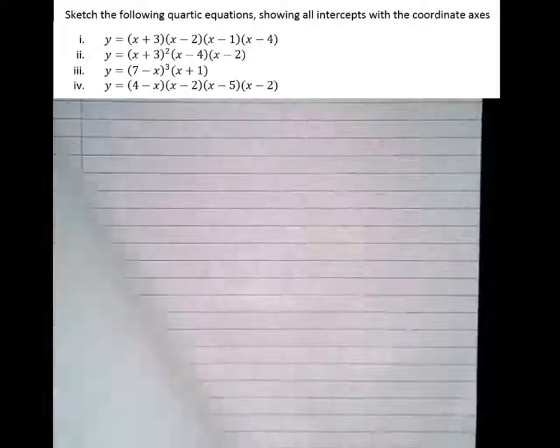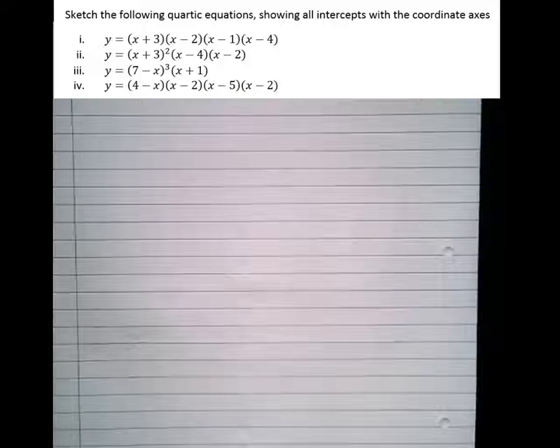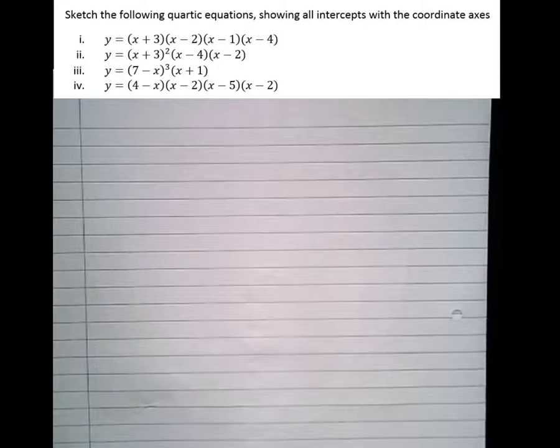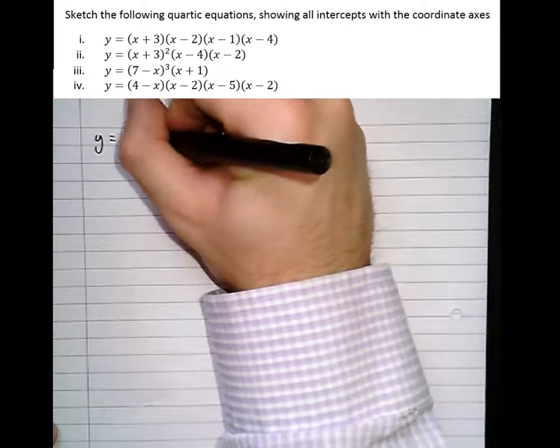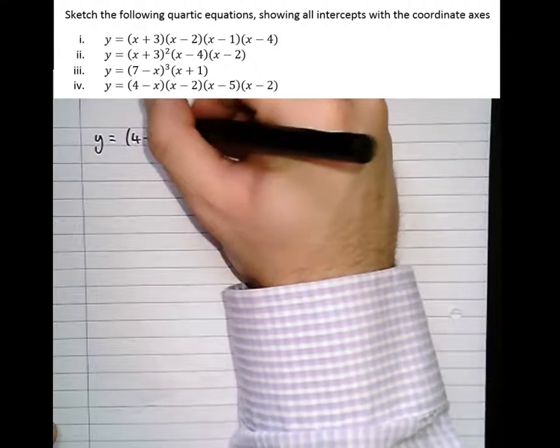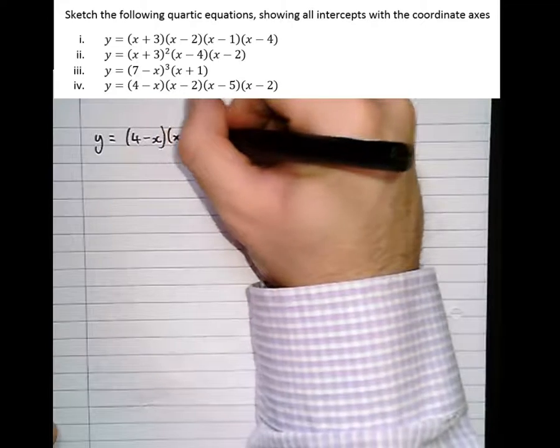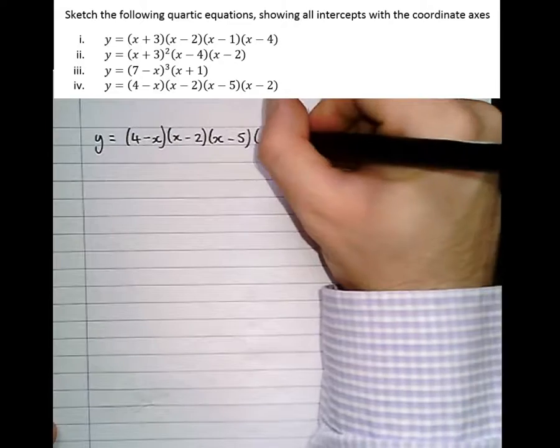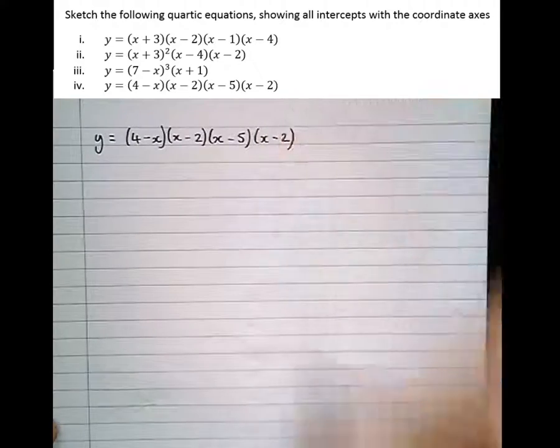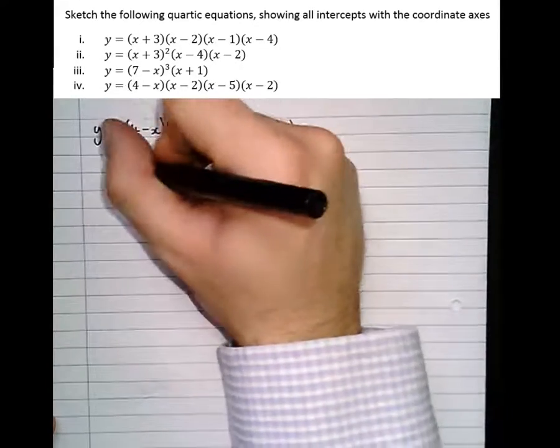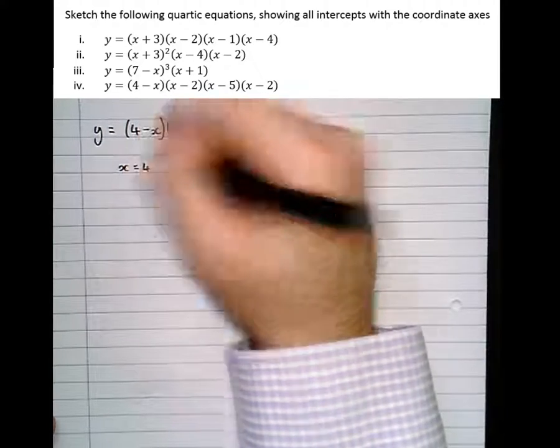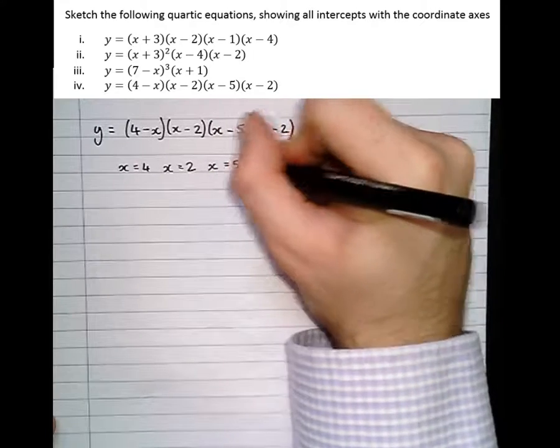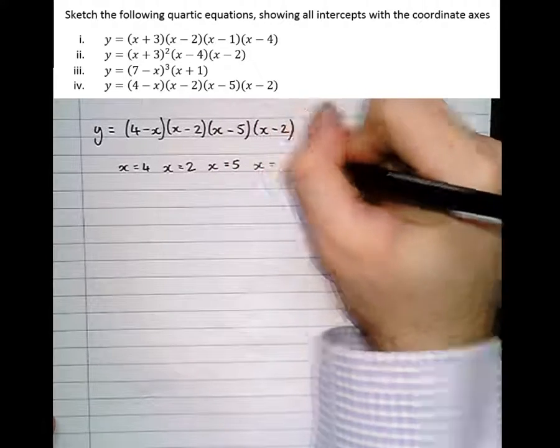Finally, part 4. Let's have a look at part 4. So y equals (4 - x)(x - 2)(x - 5)(x - 2). So there's actually a hidden double root there because the x-intercepts are 4, 2, 5, and 2 again.